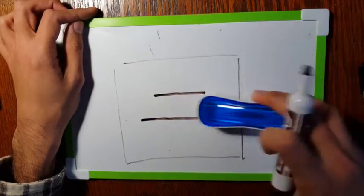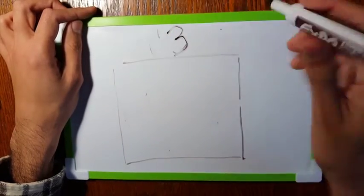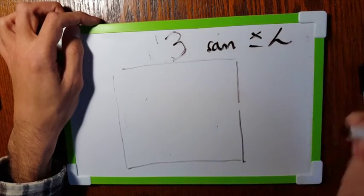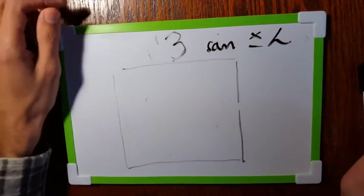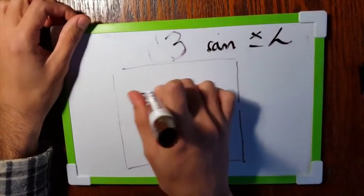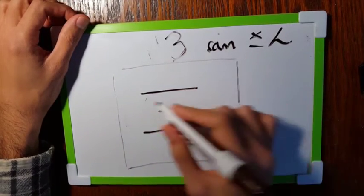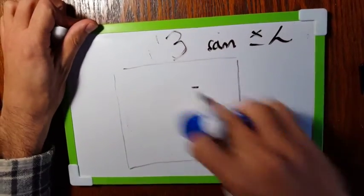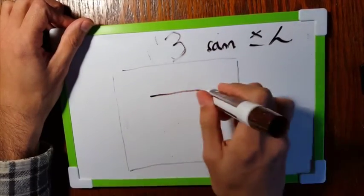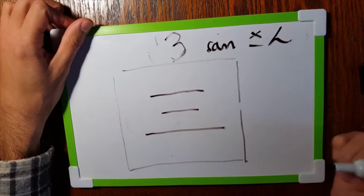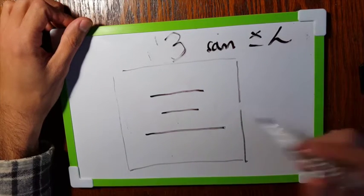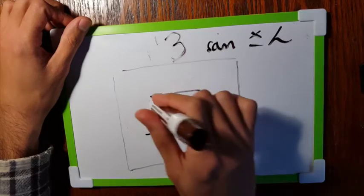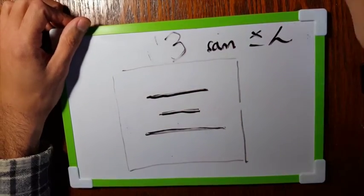Let's go to three. San. So three strokes. You got it? One, two, three. Horizontal lines. Once again. One, two, three. The first two are shorter than the last one usually. So one, two, three. San. Got it?